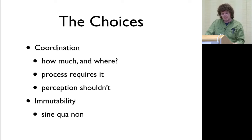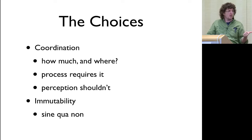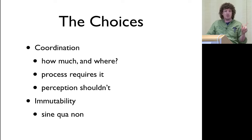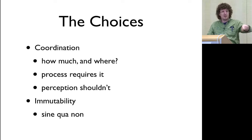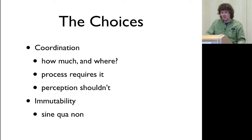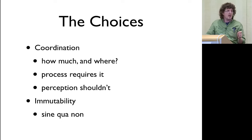We have choices in how we deal with this. There's a coordination choice: we're admitting a database is a stateful thing and the process requires coordination. Two people cannot park in the same parking spot just because you have eventual consistency — there's actually a parking spot and you have to coordinate. Process requires coordination, but the critical thing is that perception shouldn't require coordination, and it does right now. In a place-oriented database we end up with coordination just to see things because we can't see consistent things unless we coordinate.